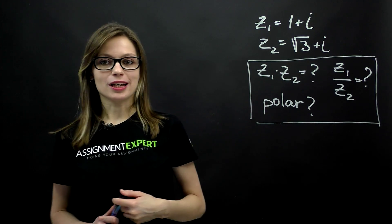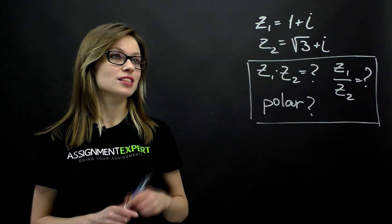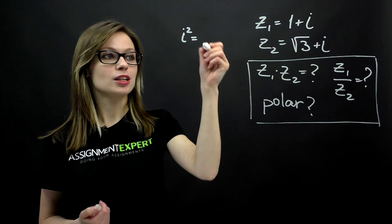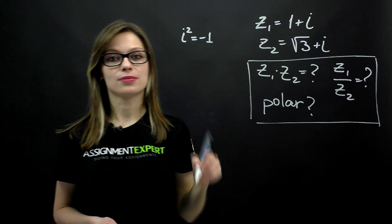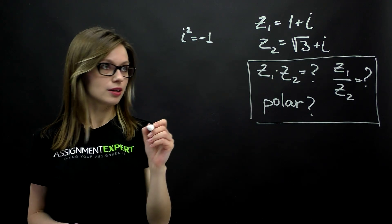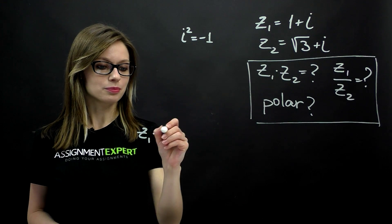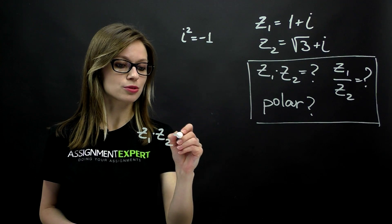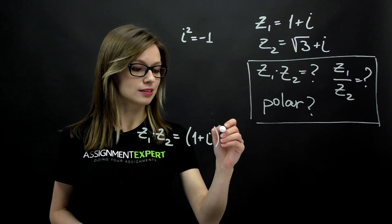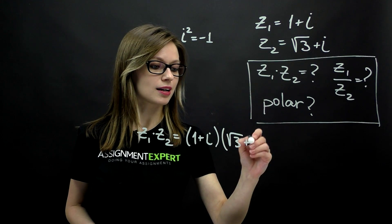Multiplication is pretty straightforward. The only trick we should remember here is that i squared is equal to negative 1. So let's get straight to it. We have z1 multiplied by z2, and that is 1 plus i times square root of 3 plus i.